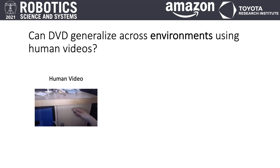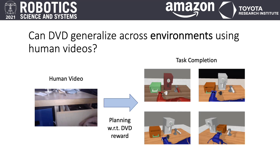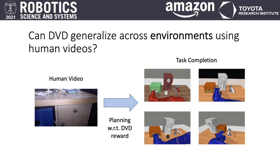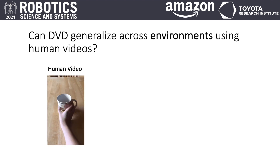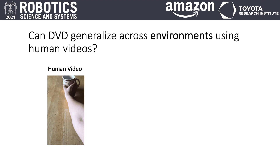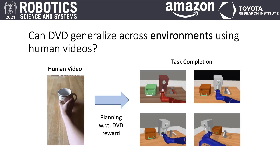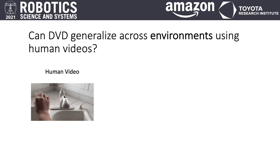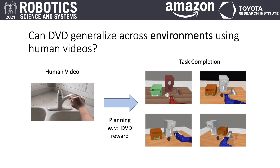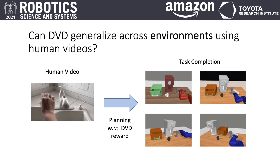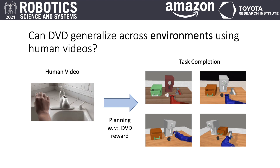Now let's see what this actually looks like. Given a human video demonstration for closing a drawer, DVD enables the agent to close the drawer in unseen test environments. When a human specifies the task of moving a cup away from the camera, we see that the agent effectively completes the task using DVD. Lastly, when a human specifies turning a faucet to the right, planning with respect to DVD's reward enables the agent to turn a faucet similarly in unseen environments. In each of these examples, DVD must overcome a large visual domain shift between the given videos and the simulation environments.